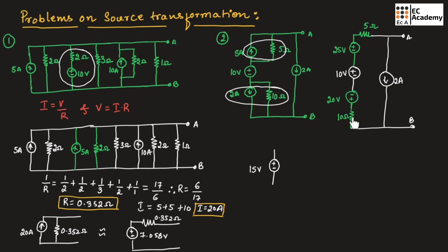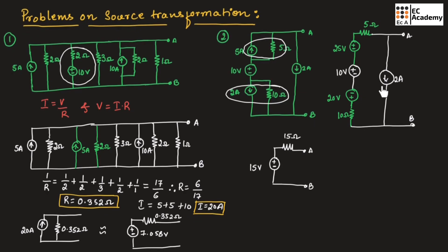If we add the two resistors we will get 15 ohms because they are connected in series, so we can write a 15 ohm resistor connected in series with the voltage source. Now we need to connect this current source in parallel with this voltage source.